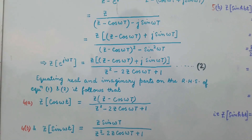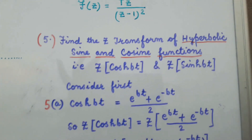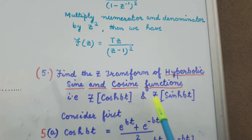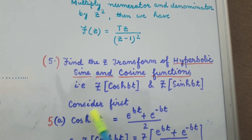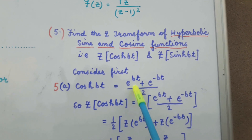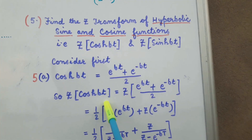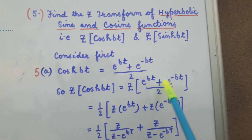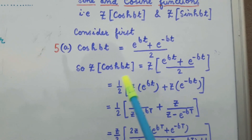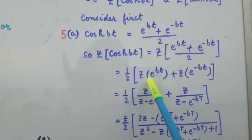The next functions are the hyperbolic sine and cosine functions. We have to find the Z transform of cosh(bt) and sinh(bt). First, we consider cosh(bt). We know that cosh(bt) = (e^(bt) + e^(-bt)) / 2. Taking the Z transform, this becomes half of [Z transform of e^(bt) + Z transform of e^(-bt)]. We have already found the Z transform of e^(bt), which is Z / (Z - e^(bT)), and similarly the Z transform of e^(-bt) is Z / (Z - e^(-bT)).